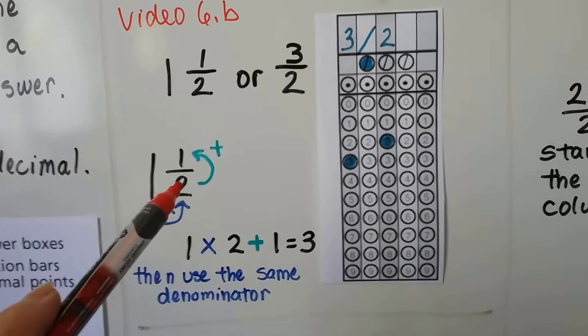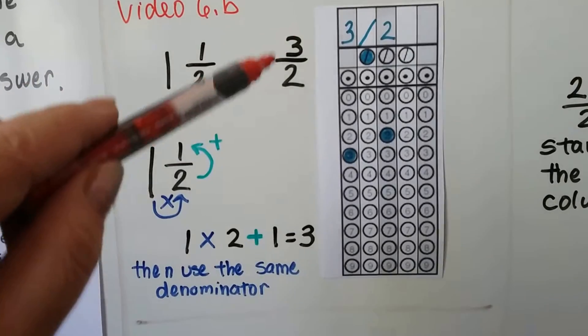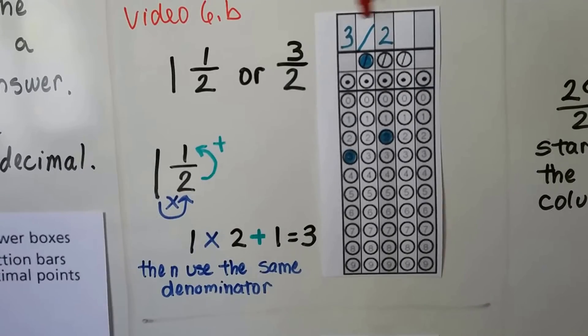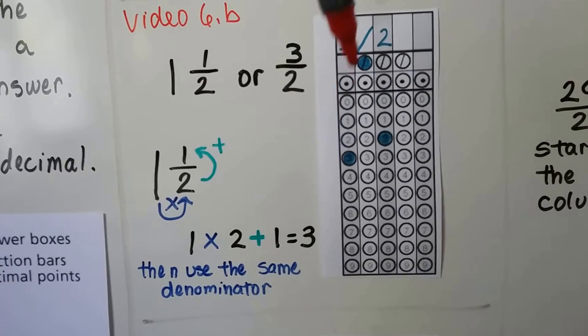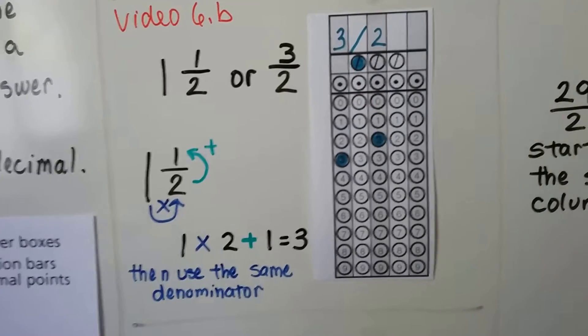So we do one times two is two plus one is three. We keep that same denominator. So we have three over a two. We have three halves. We write the three, the slash, the two, and then we fill in the three circle, the slash circle, and then the two circle. And they each get their own column.